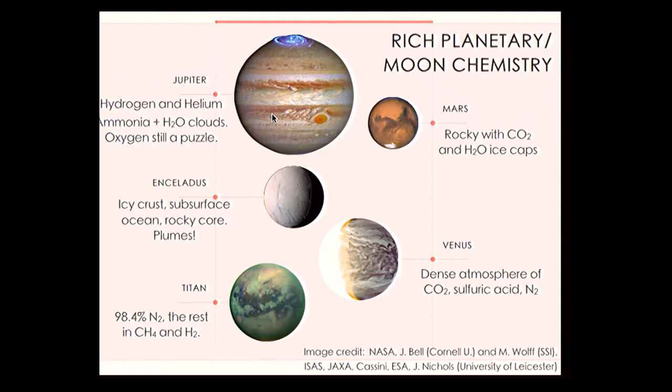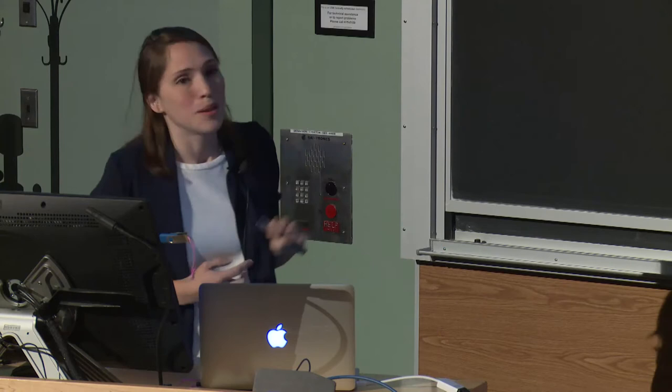Mars is a rocky planet with not much of an atmosphere, but it has ice caps — not just water ice, but a little CO₂ mixed in too. Venus has an atmosphere similar in mass to Earth's, but unlike our nitrogen-dominated atmosphere, it's dominated by carbon dioxide, creating a runaway greenhouse effect. The surface temperature and pressure are so high we can't even land a probe. It also has sulfuric acid — not the best vacation destination.